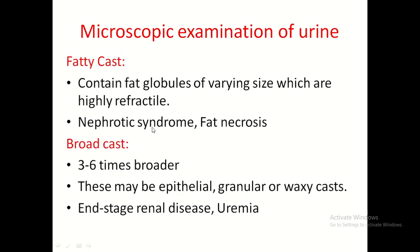Fatty casts contain fat globules of varying size which are highly refractile. Causes include nephrotic syndrome and fat necrosis. Broad casts: any type of cast — cellular, granular, or hyaline — that is three to six times broader than usual size is called a broad cast. Causes of broad casts include end-stage renal disease and uraemia.